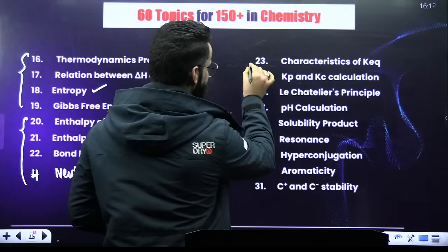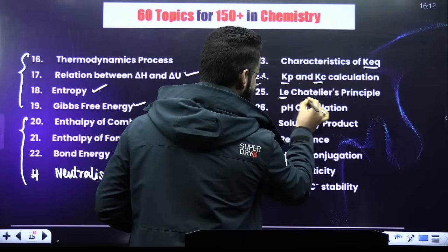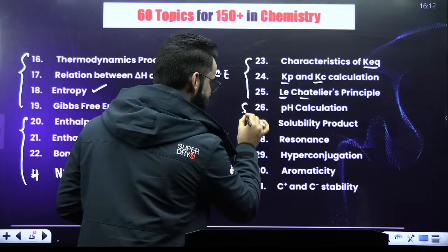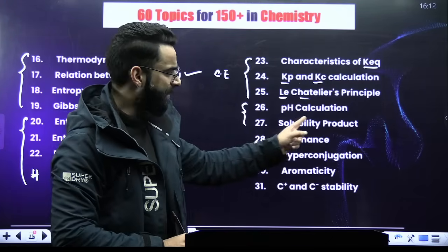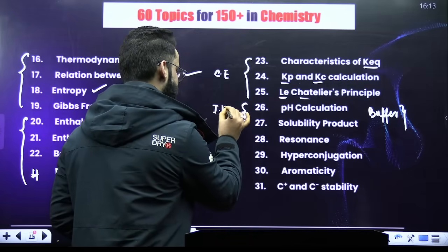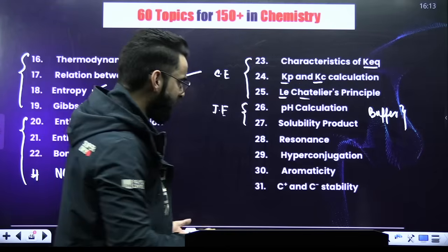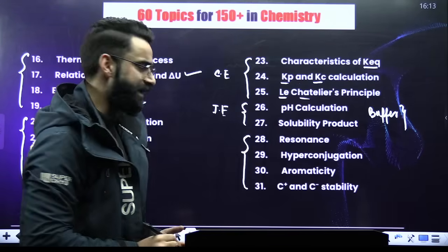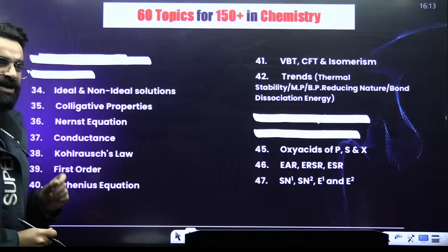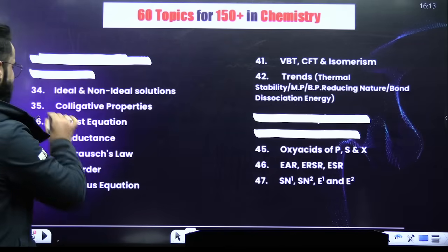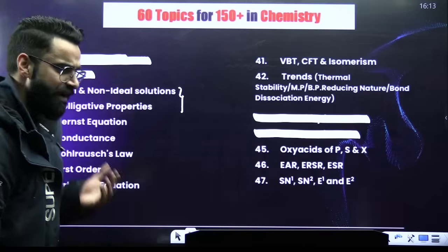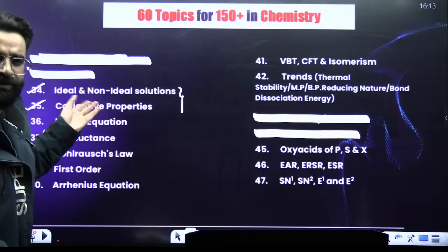For chemical equilibrium, the important topics are characteristics of the equilibrium constant, Kp and Kc calculation, and Le Chatelier's principle. In ionic equilibrium, prioritize three topics: pH calculation, solubility product, and buffer. In general organic chemistry (GOC), focus on resonance, hyperconjugation, aromaticity, carbocation, and carbanion stability. For the solution chapter, the two key topics are ideal and non-ideal solutions, and colligative properties — 90% of questions come from these.